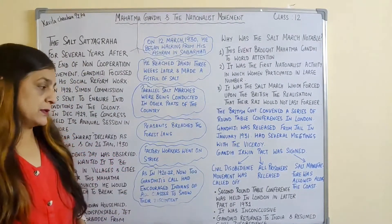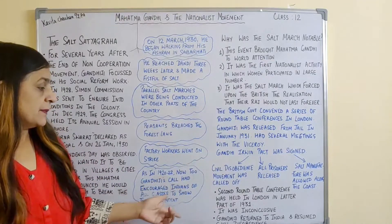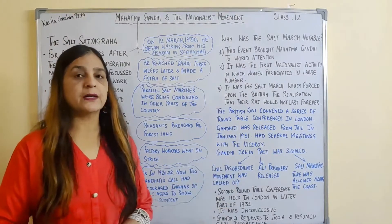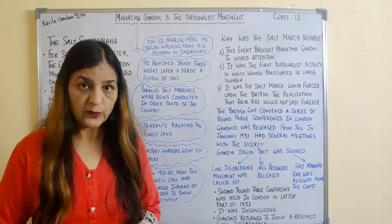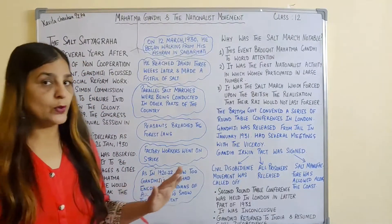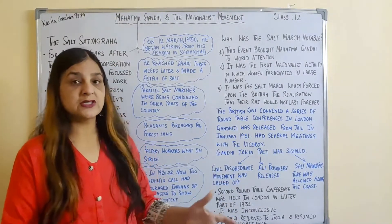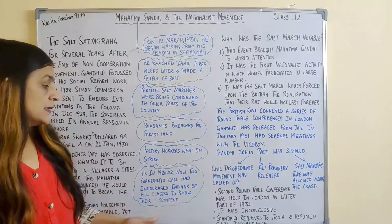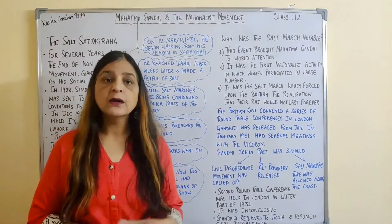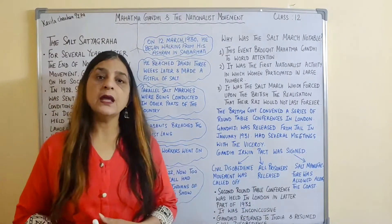The second Round Table Conference was held in London in the later part of 1931. It was inconclusive — no concrete decision was taken and the talks failed. Gandhiji returned to India and resumed the Civil Disobedience Movement.